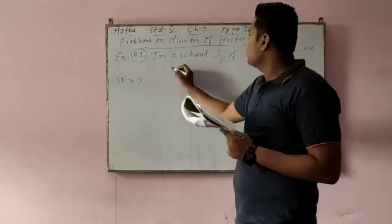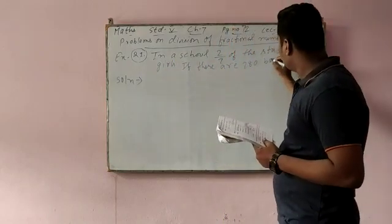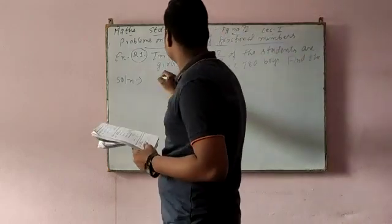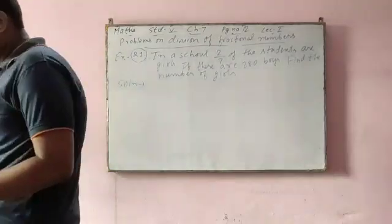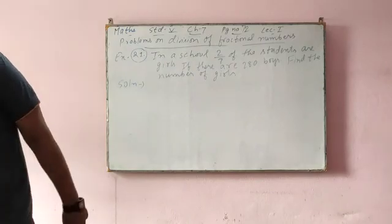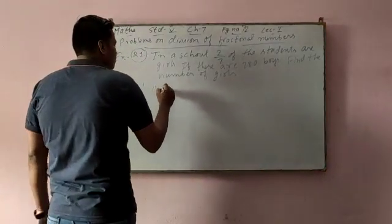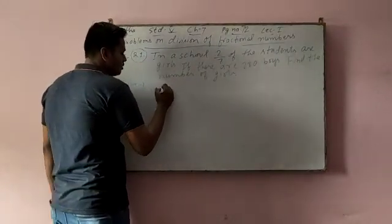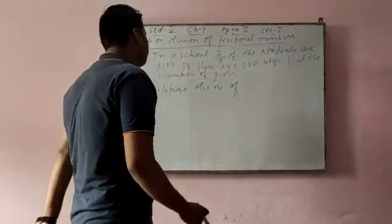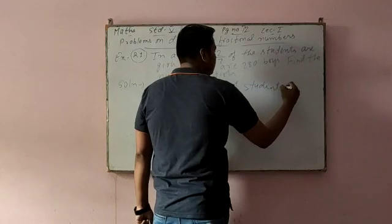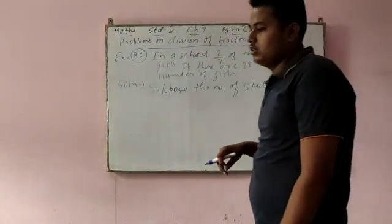In a school there are 2 by 7 of the students are girls. If there are 280 boys, find the number of girls. So, suppose the number of students is 1, because here you do not know the number of students actually.